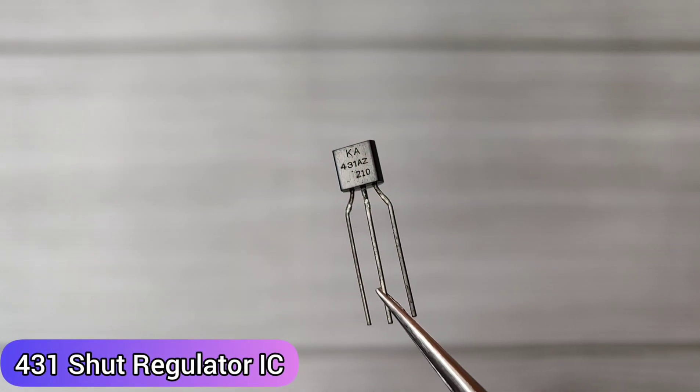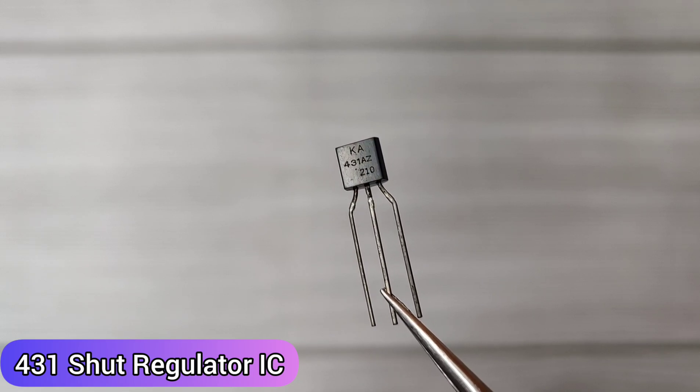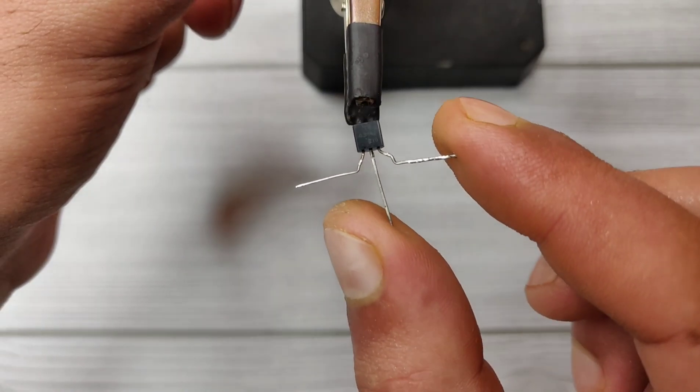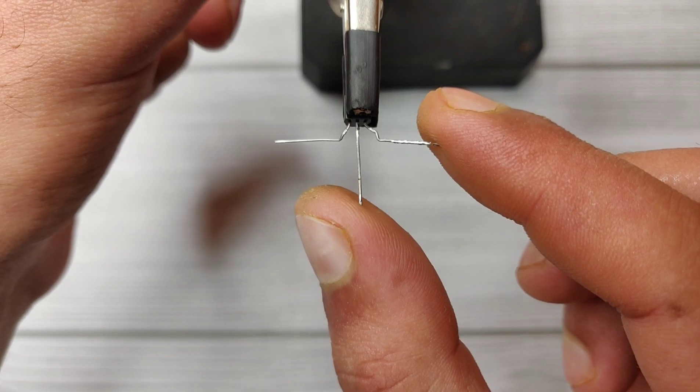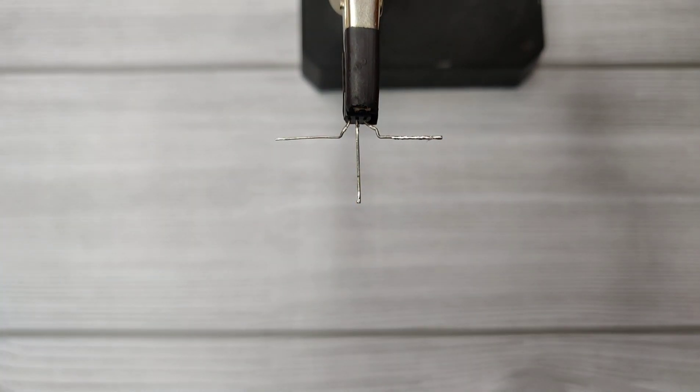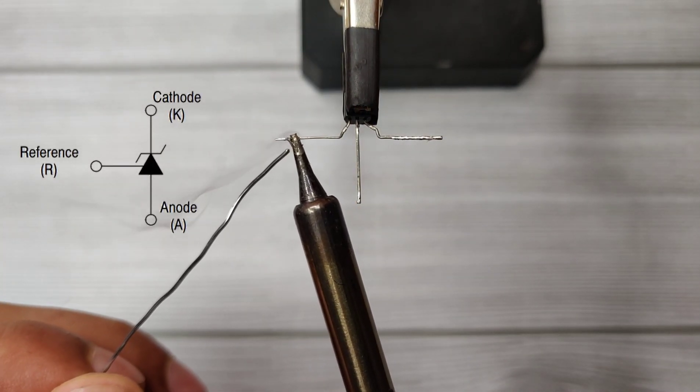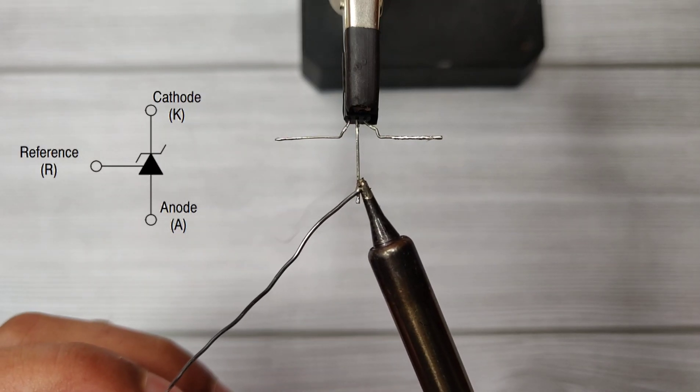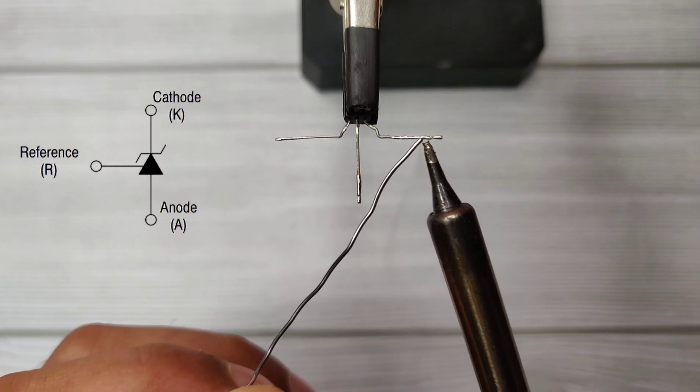So let's make this circuit to see how it works practically and how to calibrate it. Here we have a 431 shunt regulator IC: pin 1 as reference, pin 2 as anode, and pin 3 is cathode.